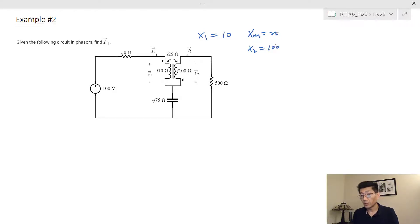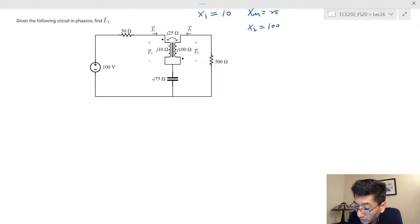Keep that in mind as we do the equivalent circuit. Since this one is going to the dot terminal and the other one is going into the other dot terminal, we're going to have the second case for the T-equivalent circuit.